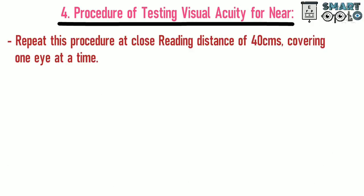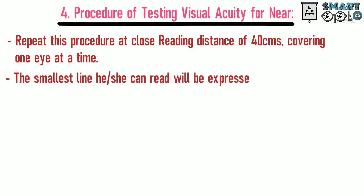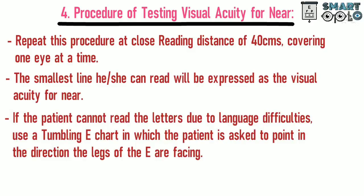Procedure of testing visual acuity for near: repeat the procedure at close reading distance of 40 centimeters, covering one eye at a time. The smallest line the patient can read will be expressed as the visual acuity for near. If the patient cannot read the letters due to language difficulties, use a tumbling E chart in which the patient is asked to point in the direction the legs of the E are facing.